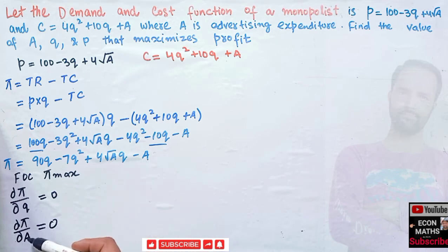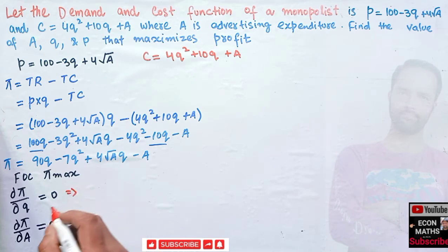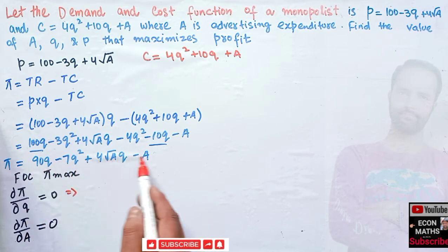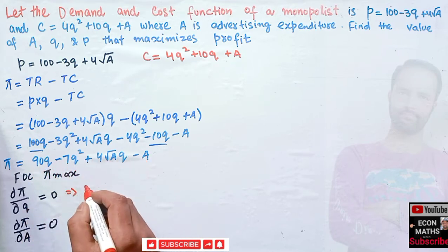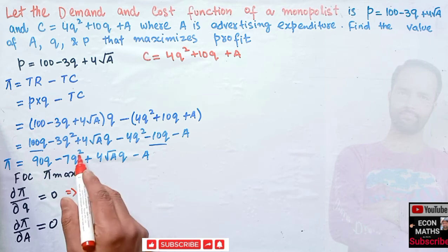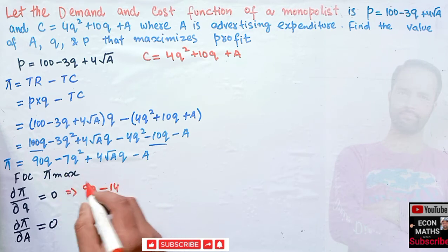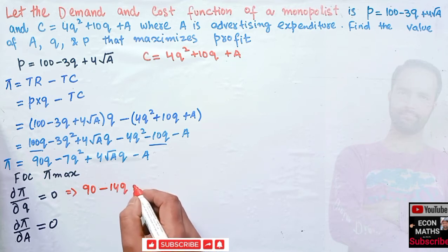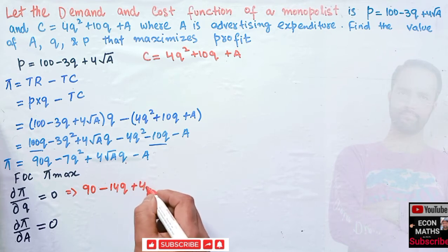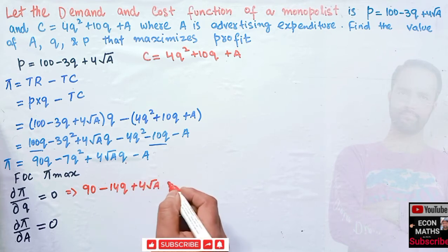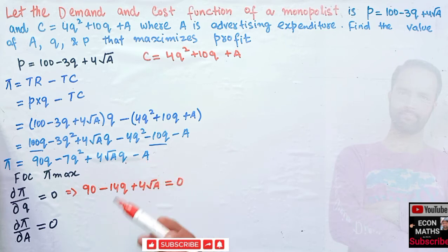Taking the partial derivative with respect to Q and setting it equal to zero: the derivative of 90Q is 90, the derivative of −7Q² by the power rule is −14Q, and the derivative of 4√A·Q with respect to Q is +4√A. Setting this equal to zero gives: 90 − 14Q + 4√A = 0. The derivative of A is zero since A is treated as constant when differentiating with respect to Q.